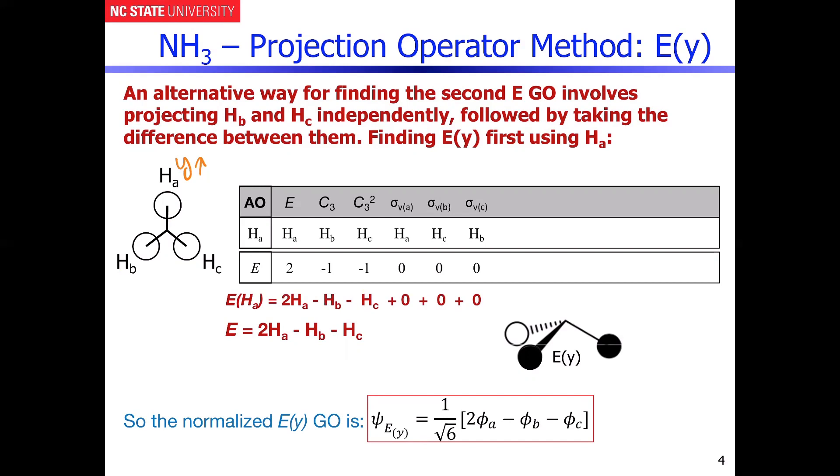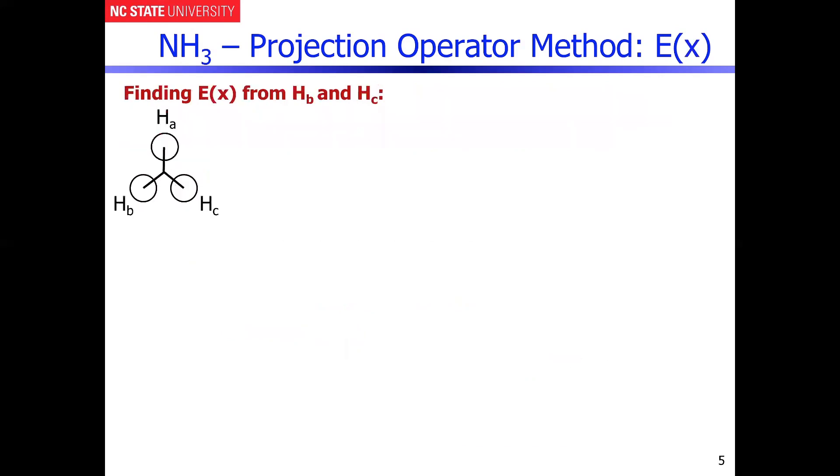Now the game is going to change. How do we determine E(x) from HB and HC? And now let's not use the normalization method. Let's do it a different way.